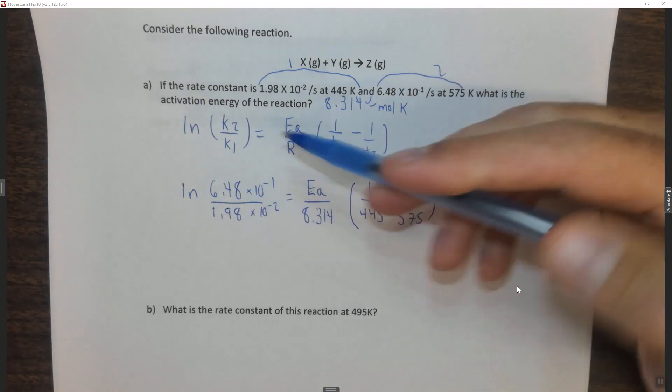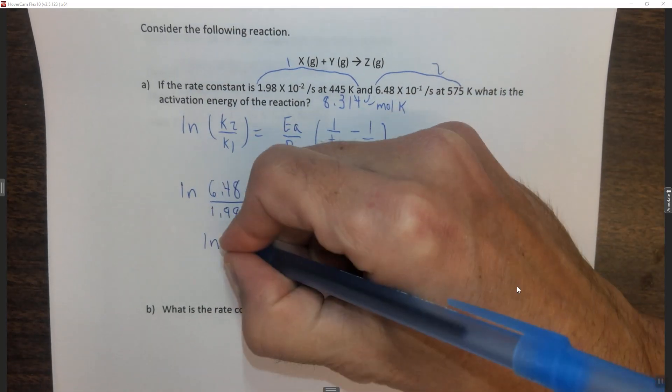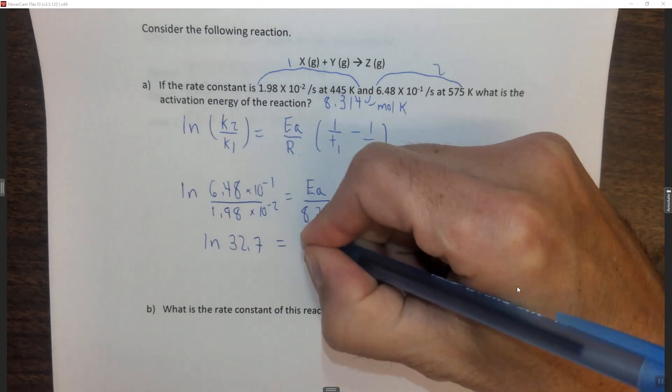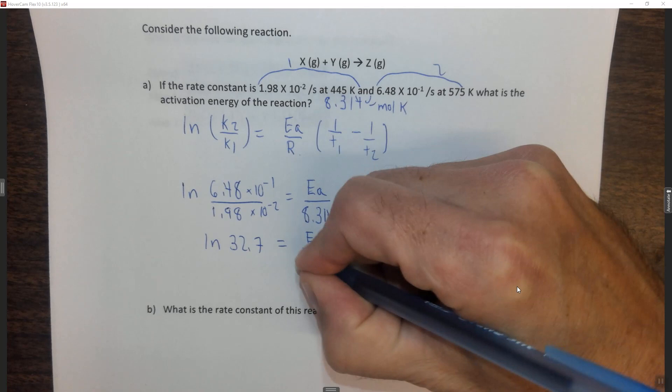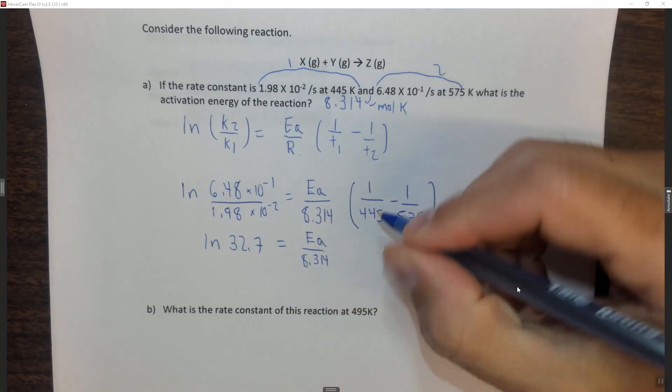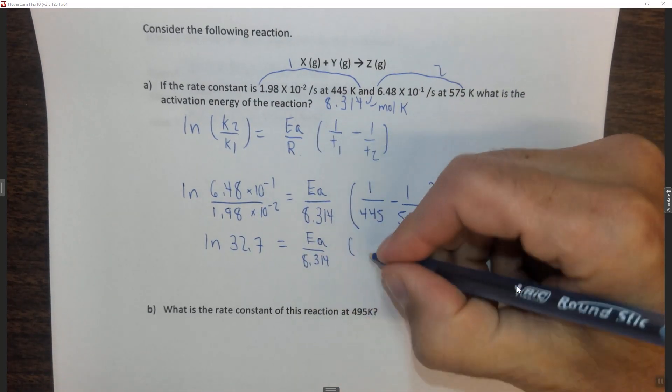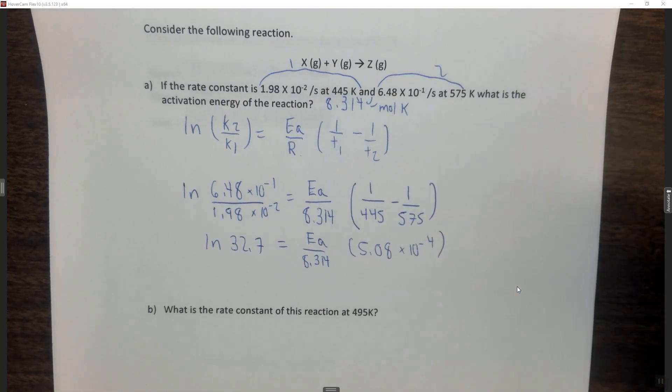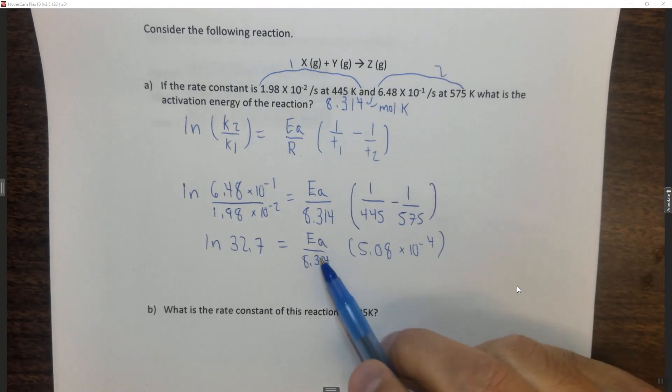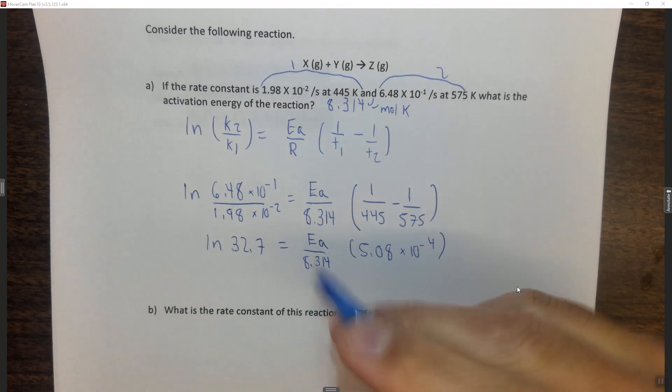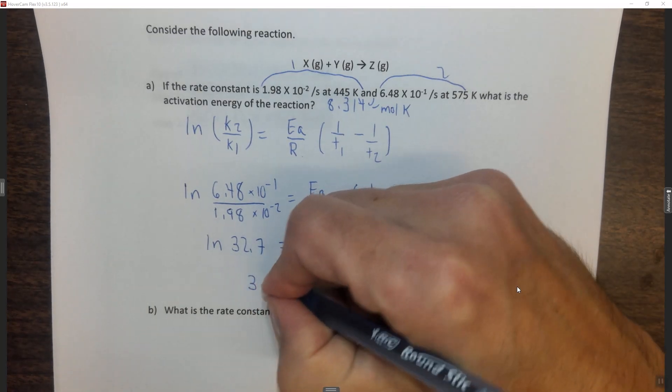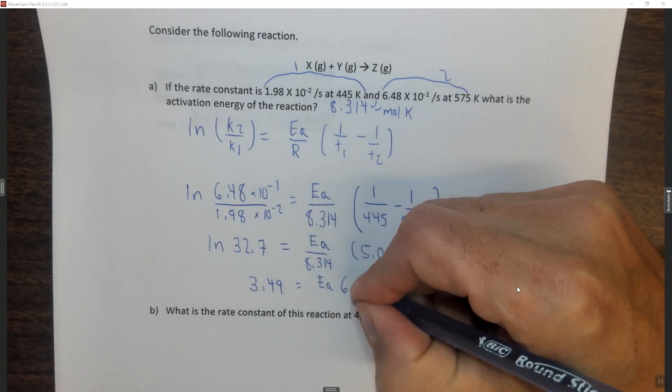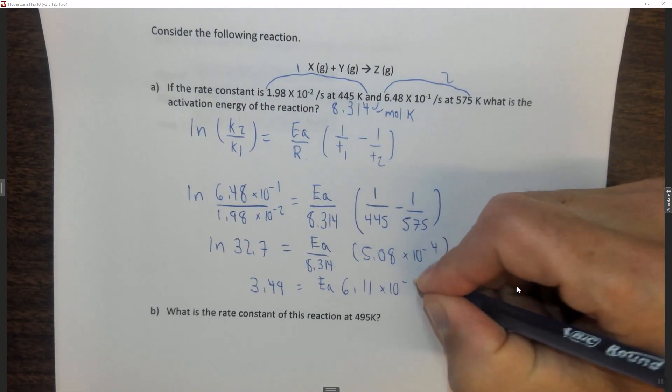If we divide these, we get the ln of 32.7 equals Ea over 8.314 joules per mole K, and if you subtract these two you get 5.08 times 10 to the minus 4. I'm going to take that and divide by this, you're going to take the ln of this, and you get 3.49 equals Ea times 6.11 times 10 to the minus 5.